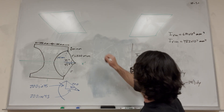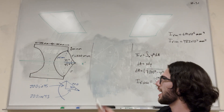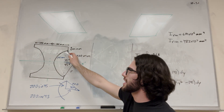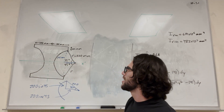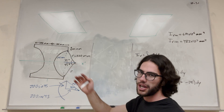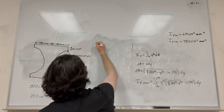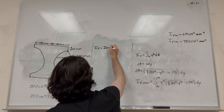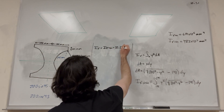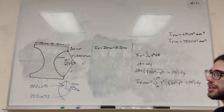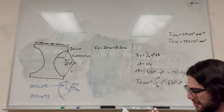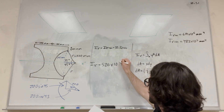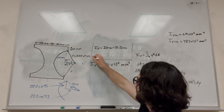If we want to find our total inertia around the x-axis, we take the whole rectangle's inertia and subtract the inertia from these two half-circle cutouts. They're symmetrical across this axis, so we do two of them. The equation is: I_x' = I_x'_rectangle − 2 × I_x'_circle. Plugging those two numbers in, you find that I_x' equals 520 times 10 to the sixth millimeters to the fourth. And that's your final answer.